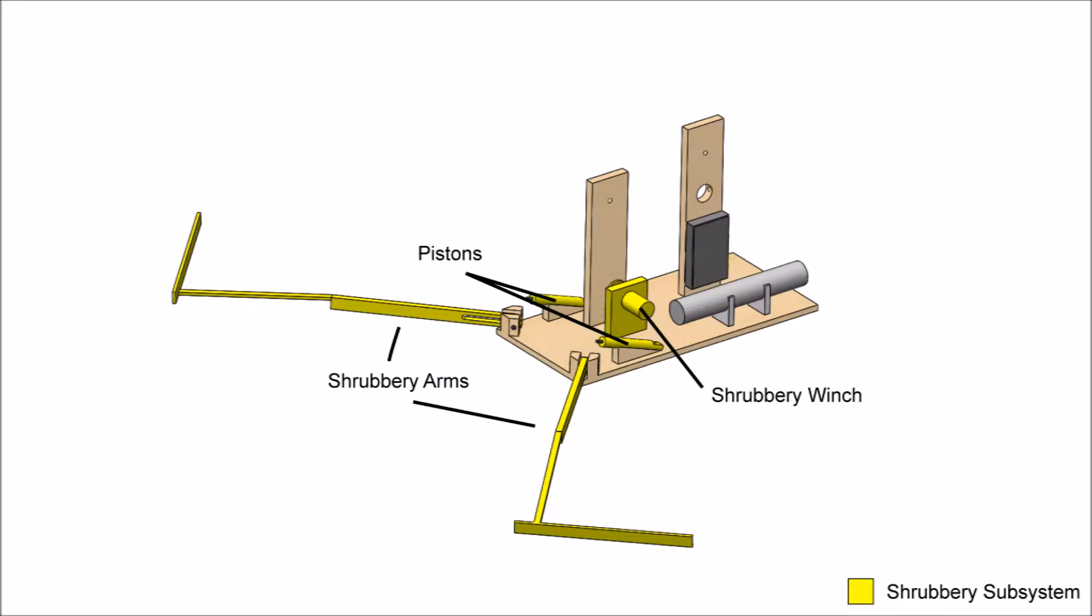The shrubbery arms are in a T-shape in order to efficiently scoop in the tennis balls. They also have a slot where they connect in order to box efficiently and be flexible enough to scoop inward.